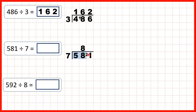As always we write the remainder in front of the next digit we're going to divide. So now we have 21 divided by 7. 21 is in the 7 times table and because that's 3 times 7 we write 3 in our answer line. So our answer is 83.